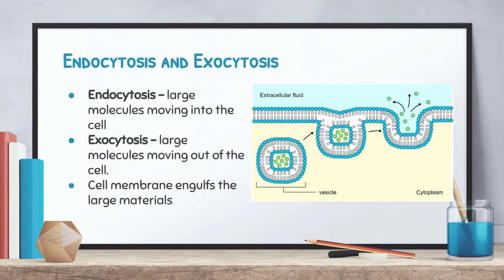For even larger molecules moving in and out of the cell, we refer to endocytosis and exocytosis. The root 'endo' means in and 'cyto' means cell, so endocytosis involves large molecules moving into the cell. Exocytosis refers to large molecules moving out of the cell. The cell membrane engulfs large materials coming in and transports them typically to the Golgi apparatus. For exocytosis, a vesicle fuses with the cell membrane and pushes material outside. These vesicles are made up of components of the cell membrane such as the phospholipid bilayer.